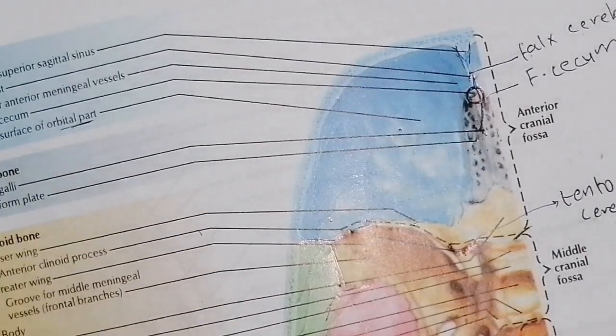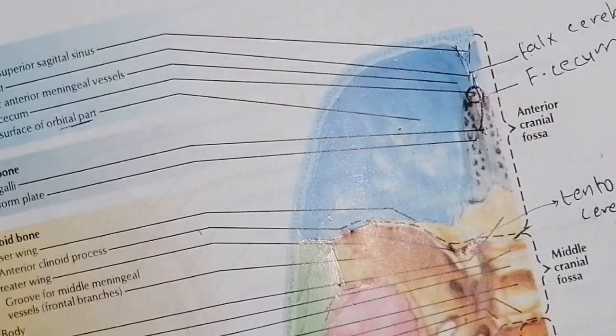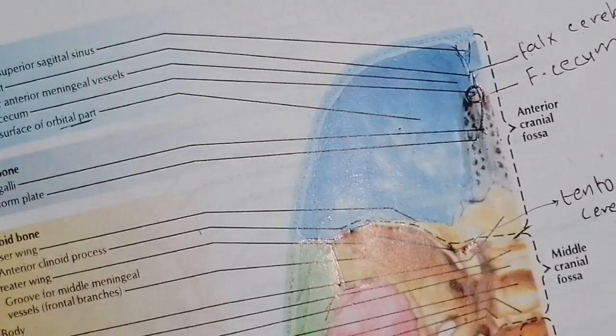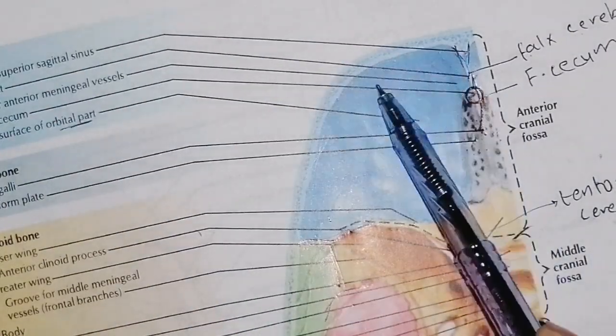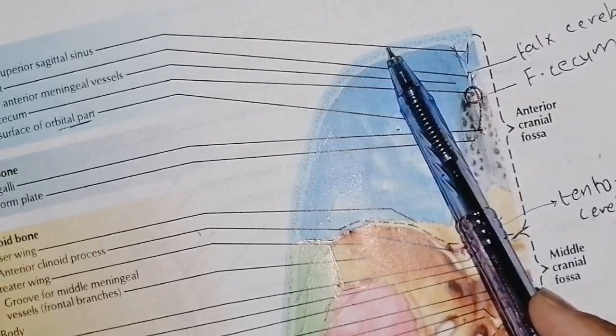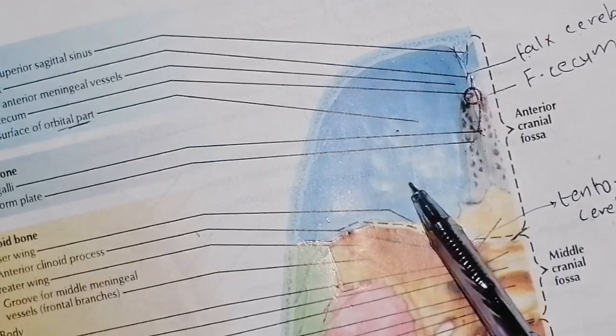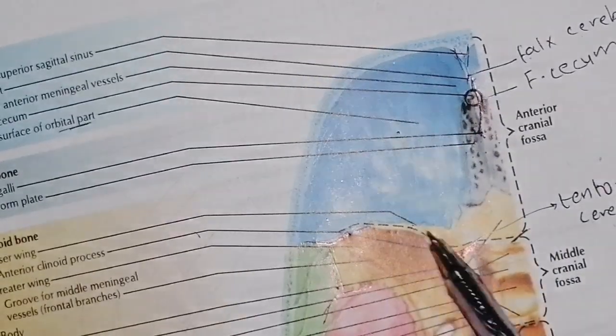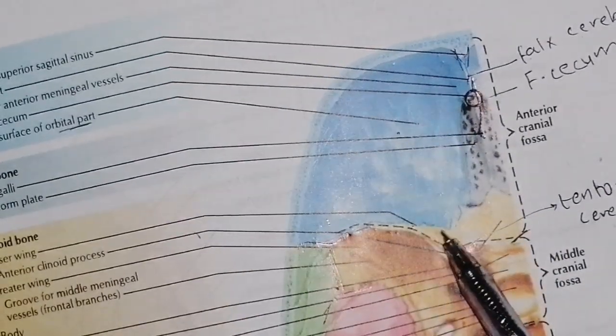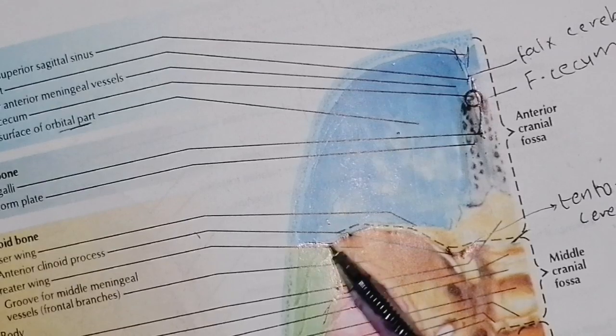So to summarize the anterior cranial fossa: it is bounded anteriorly by the frontal bone and posteriorly by the lesser wing of the sphenoid bone, which is exactly attached anteriorly.